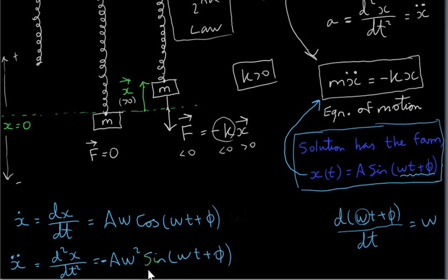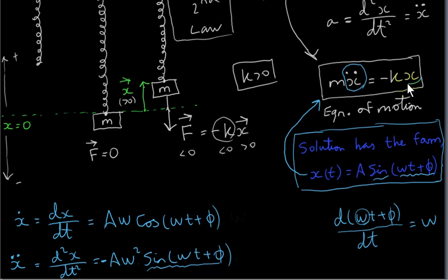Notice that the second derivative is a sine function — the same type of function as the solution x(t). That is why the sine function is indeed a solution: its second derivative is a constant multiple of itself, with the constant being minus omega squared. That is exactly what we need to satisfy this differential equation — a function whose second derivative is a multiple of itself. We could also have used a cosine function, since differentiating cosine twice also returns a cosine.